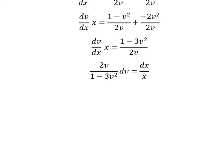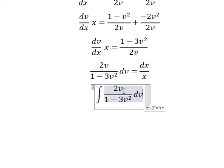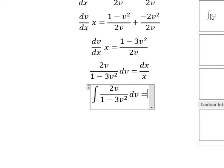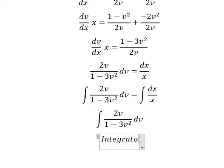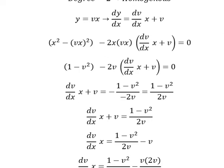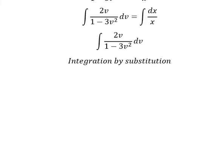Next we put the integral on both sides. Now I will concentrate on this one. We need to use integration by substitution. I will put u equals 1 minus 3v squared.